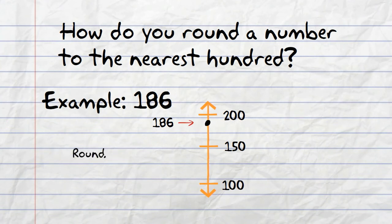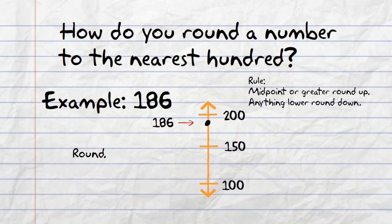Since 186 is at or above the midpoint on our vertical number line, we would round up to 200. So, 186 rounded to the nearest 100 is 200.